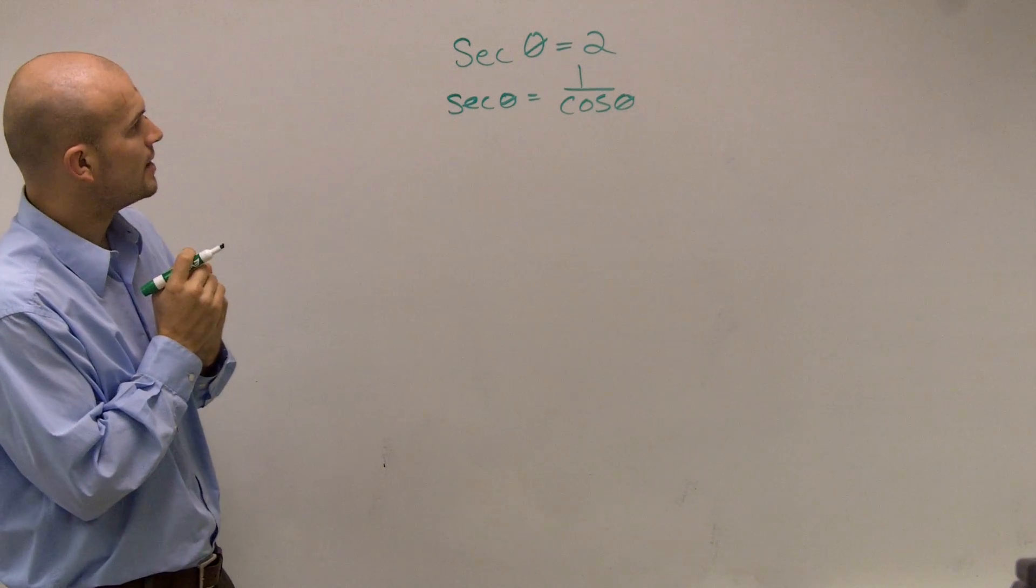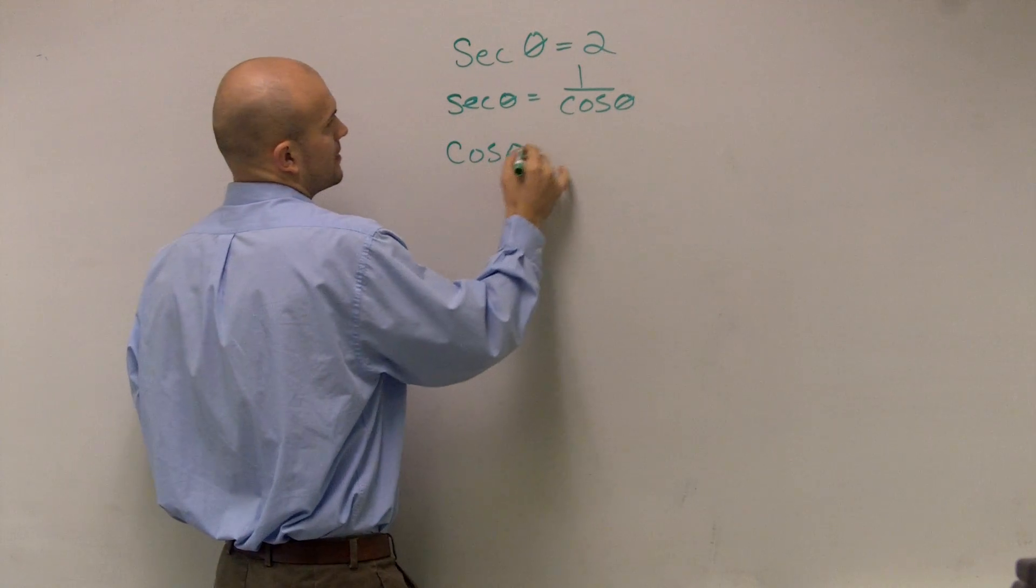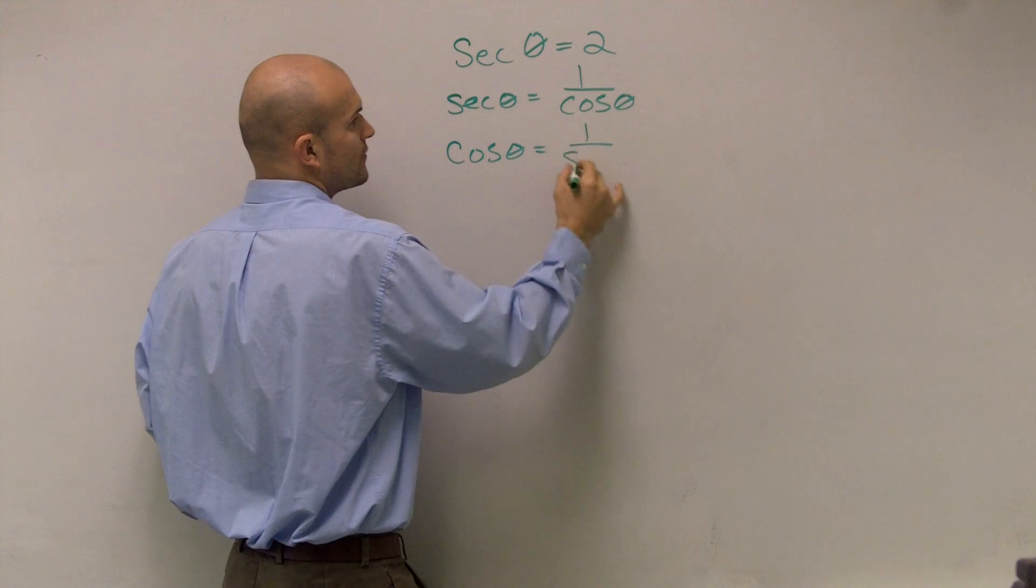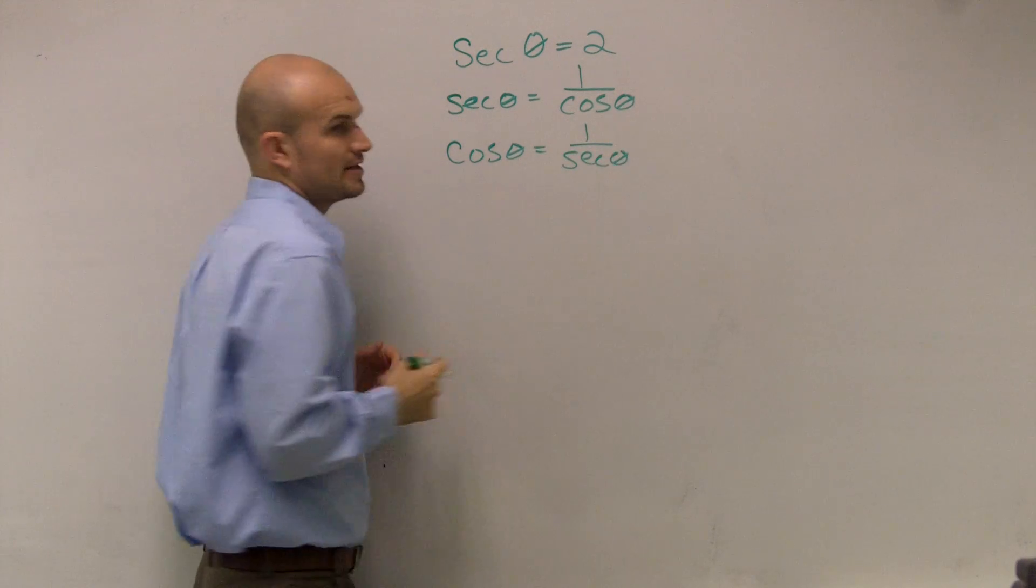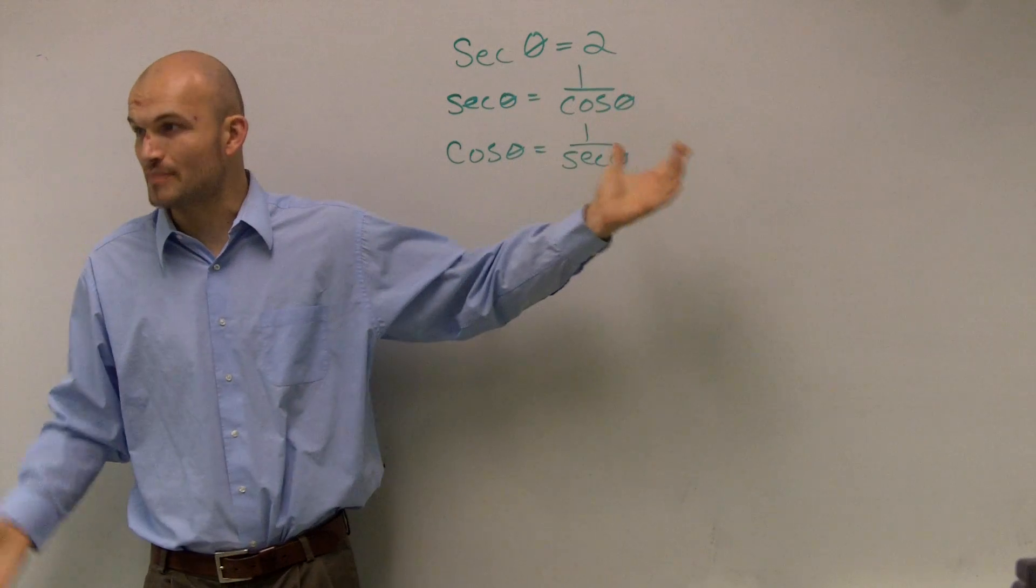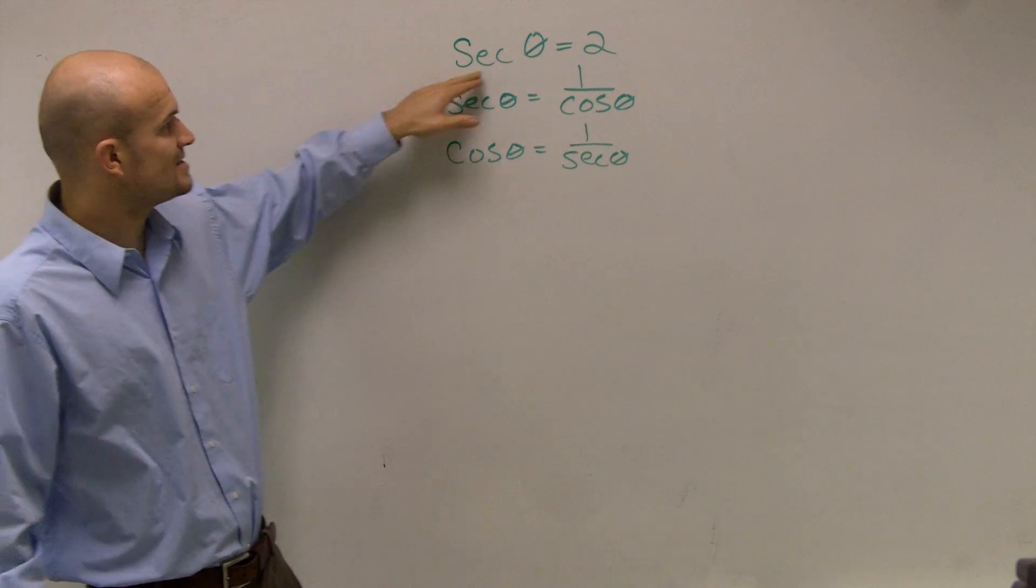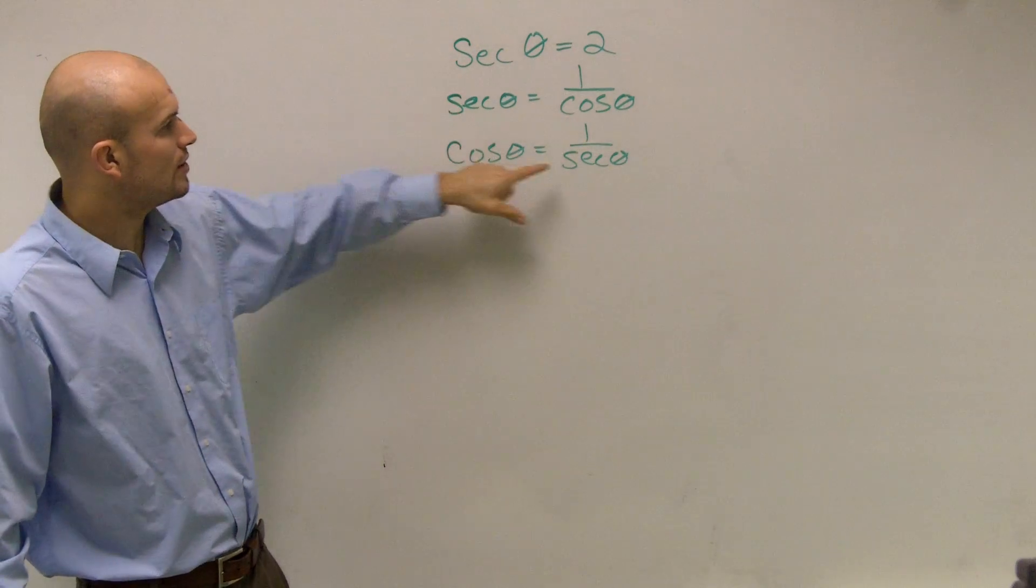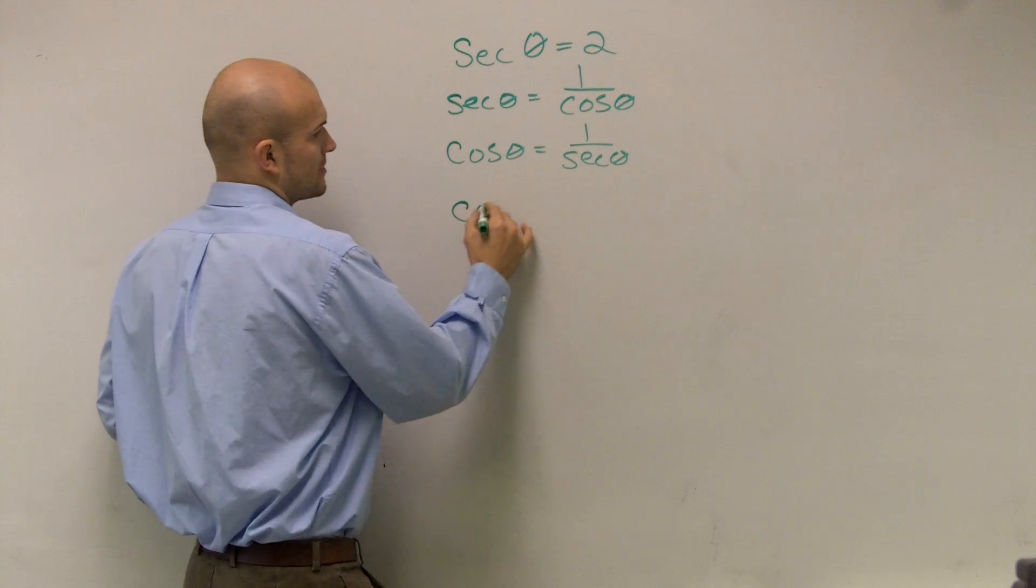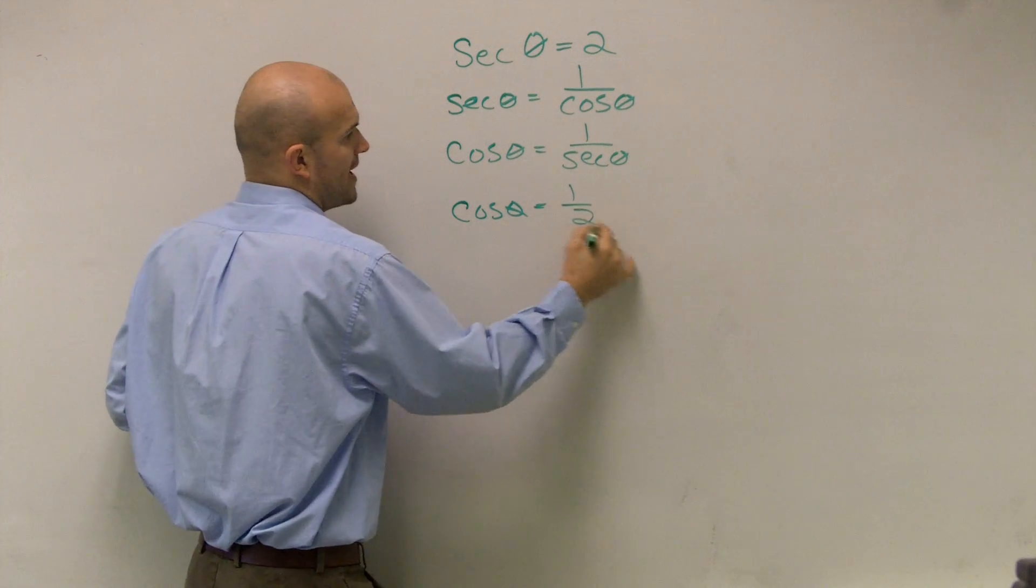Okay, so we could also say that cosine of theta equals 1 over secant of theta. Because remember, what our idea is, we need to find out what is the angle measure that we're given, or what is the degree measure. So if I say secant of theta is 2, well, that's the same thing as cosine of theta equals 1/2.